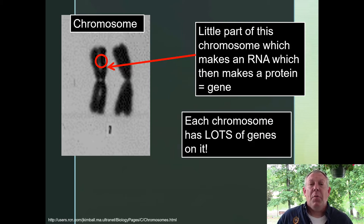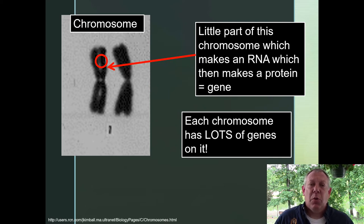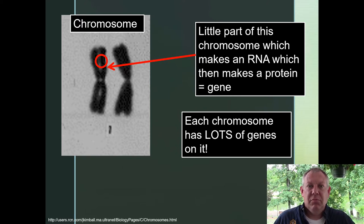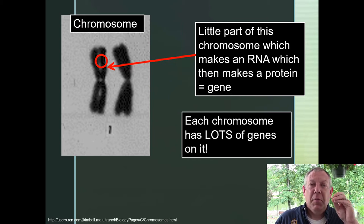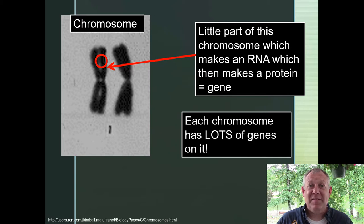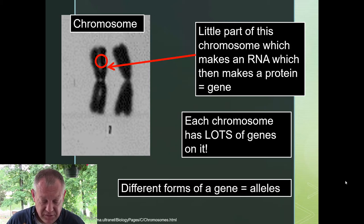Every chromosome has lots of genes on it. Later we'll talk about how actually the majority of the chromosome doesn't code for anything — the majority of a chromosome is non-genetic. However, the small part does have lots of genes. So the genes are very small relative to the size of the chromosome, but each chromosome has lots of different genes on it.